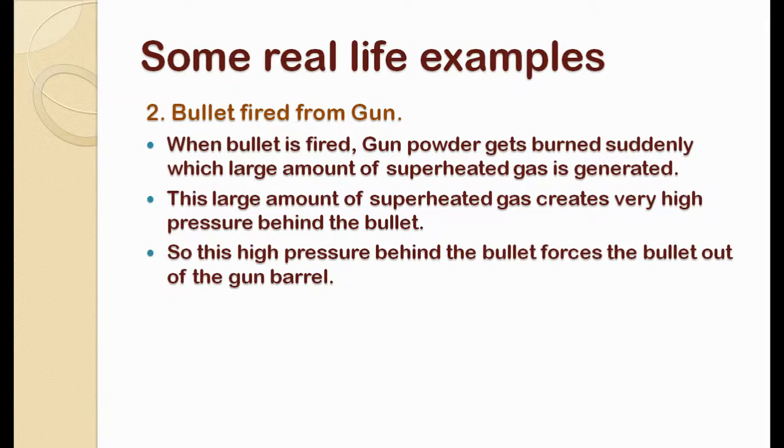So we will move on to the second example. This is how bullet gets fired from gun. So when we fire a gun, gun powder present inside the gun gets burnt suddenly. This sudden burning of gas creates tremendous amount of heat and superheated gas inside the gun barrel. And as per Gay-Lussac's law we have studied, this high amount of heat generated also raises the pressure of superheated gases. So these high pressure gases present behind the bullet exert pressure onto the bullet and force it to come out with high speed.